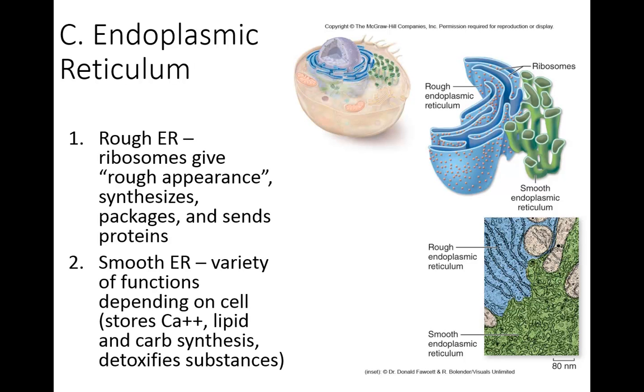So the endoplasmic reticulum there are two types. Rough, again, those have ribosomes on them. And so they are able to make proteins. And then the endoplasmic reticulum is able to put a membrane around that protein and send it off to where it's needed. The smooth endoplasmic reticulum, depending on the function of the cell, will have different functions. So in muscle cells it stores calcium. It's also involved in lipid and carb synthesis in fat cells or liver cells. And it's also used to detoxify substances. So if there are toxic byproducts of making a protein, it will bind them and keep them from destroying other parts of the cell.